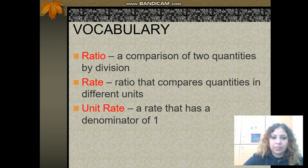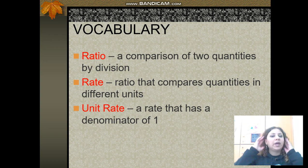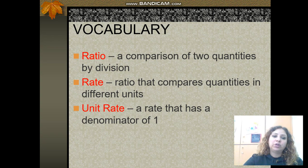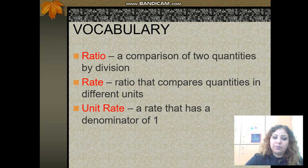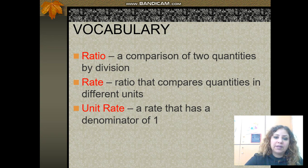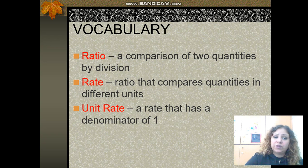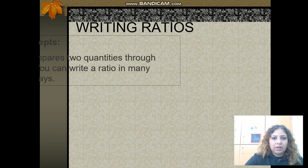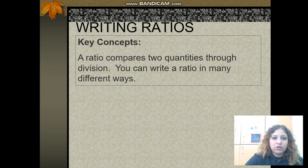For example, a rate might involve miles and hours, showing a relationship between distance and time. The unit rate is a rate that has a denominator of one — the denominator for the unit rate is always one.